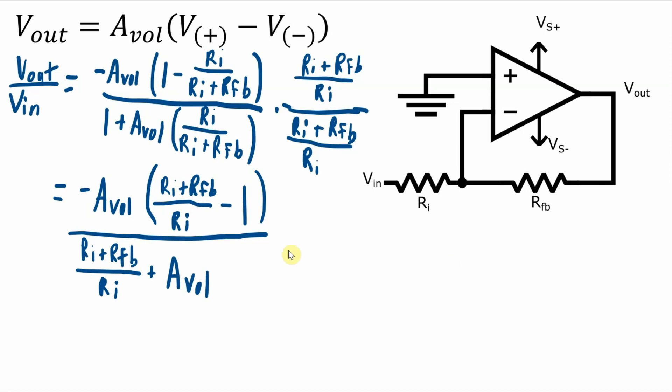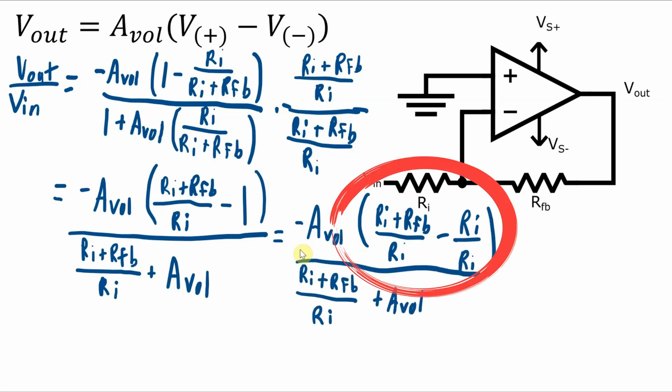So I'm effectively multiplying by one but this allows me to cancel out some terms that are on the denominators. Now if I substitute RI over RI for this one here, then since these terms have a common denominator I can get RI plus RFB minus RI.